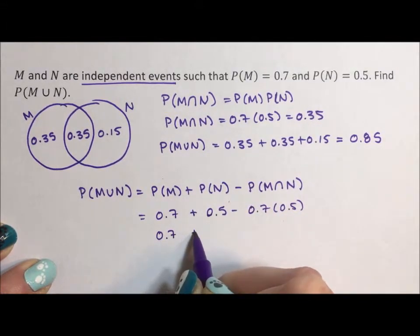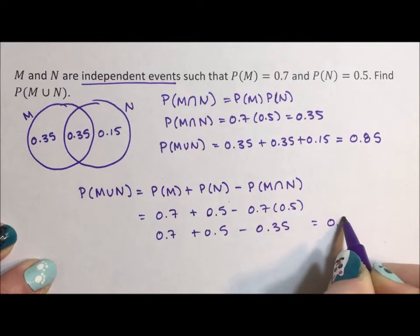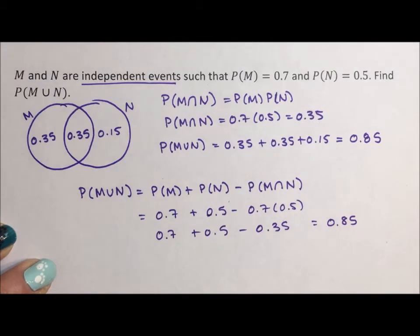0.7 plus 0.5 minus 0.35, which will also give you 0.85. Either way will give you the same answer.